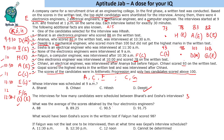What is the average score of the four electronics engineers? The four electronics engineers scored 108, 88, 83, and 78. Their sum is 357, and 357 divided by 4 equals 89.25.